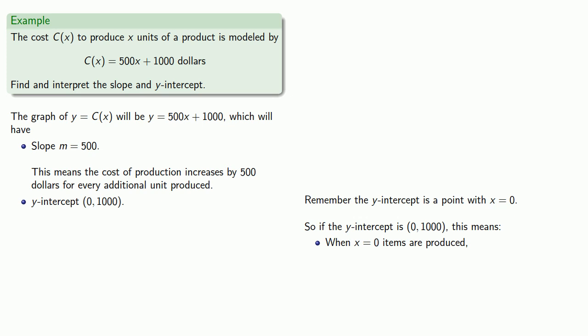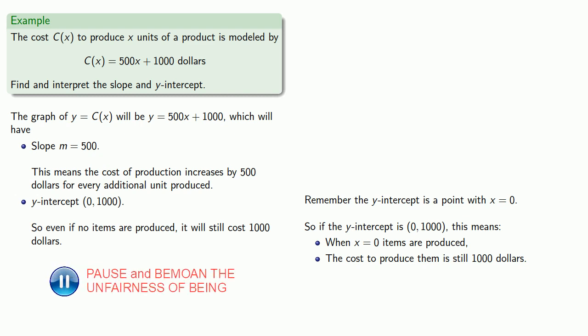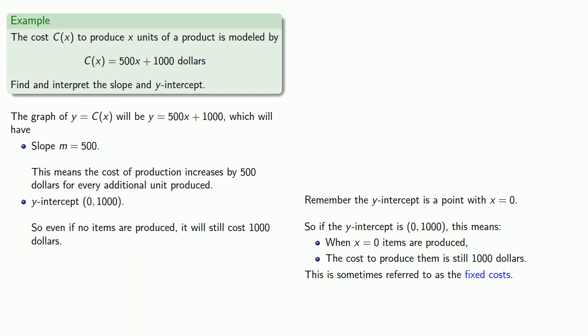Well, our y-value is c(x), and c(x) is our cost. So the cost to produce them is $1,000. And so the way we can read this is that even if 0 items are produced, even if no items are produced, it will still cost $1,000. And this is sometimes referred to as the fixed cost. This is what it's going to cost you to do absolutely nothing.